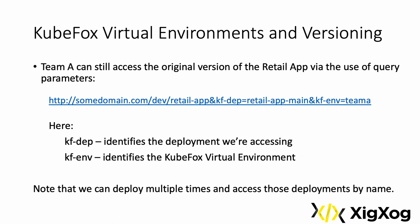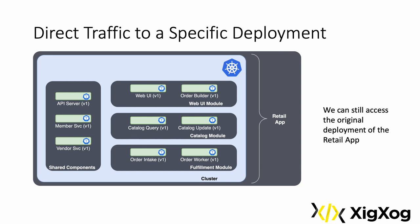Default traffic would use version 2 of the web UI, and it would appear that the only version of the retail app were this one. The prior version would still be available, though. Unreleased or prior versions of apps can still be accessed via query parameters. We can run and access multiple deployments simply by specifying the name of the deployment in the URL and the KubeFox VE — deploying multiple times and accessing those deployments as if they were running in their own private sandboxes. Team A can access the original version of the retail app after deploying the new version; it will appear as if nothing changed, with no deployment or other configuration changes necessary.